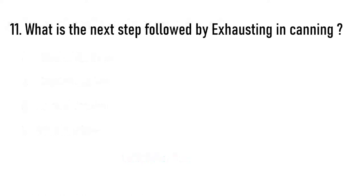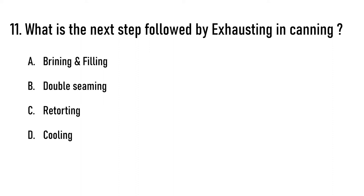What is the next step followed by exhausting in canning? Options are A) brining and filling, B) double seaming, C) retorting, D) cooling. The correct answer is option B, double seaming.